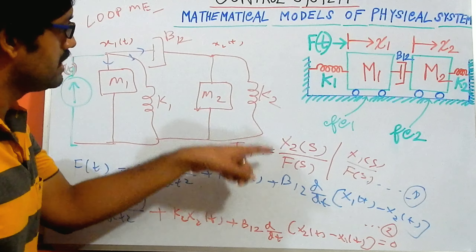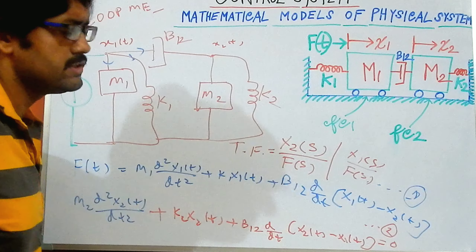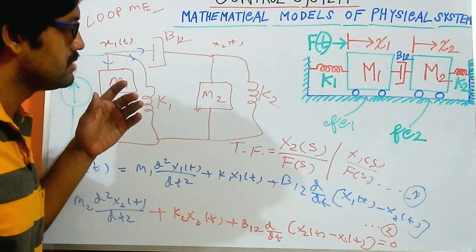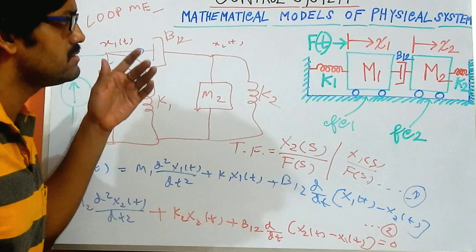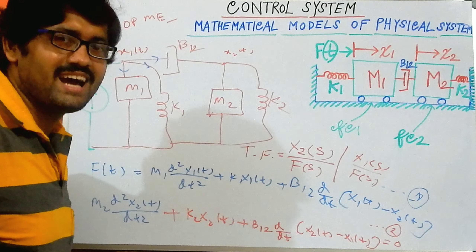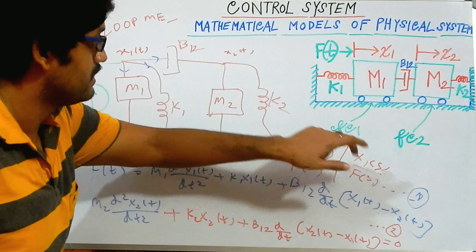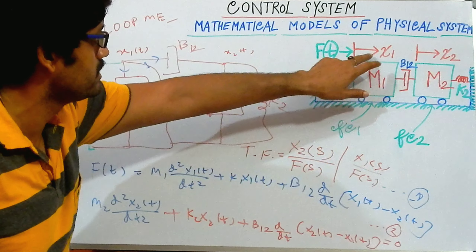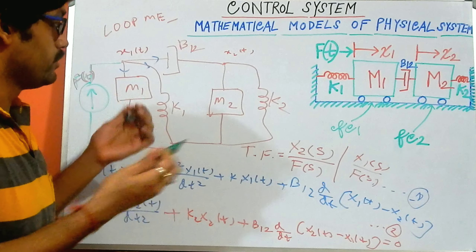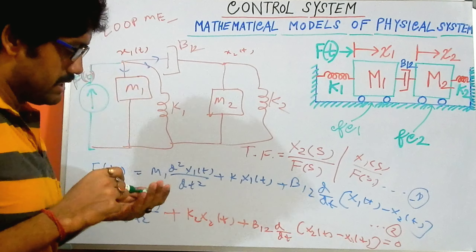So this is our third problem. If you are not able to find the transfer function ratio, please follow my previous video where I had solved all the required steps. Actually, I have forgotten one thing here: I need to include fc1 and fc2. As you can see, fc1 is connected with x1 and fc2 is connected with x2. I want to include these in my equation and diagram.